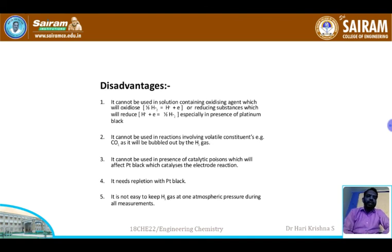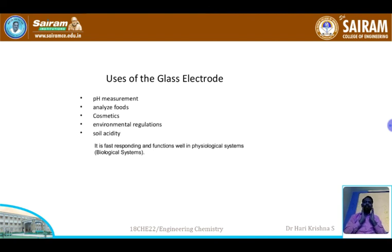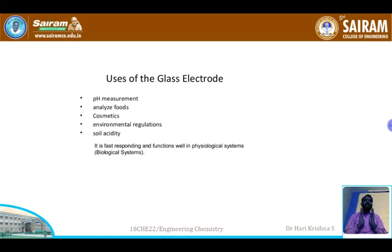The uses of the glass electrode include: pH measurements — almost all pH instruments use the glass electrode. It is used to analyze food, cosmetics, environmental regulation, and soil acidity. Wherever acid measurement is required, the glass electrode is used, since it depends on the concentration of H+ ions. pH equals negative logarithm of H+ concentration, so the glass electrode is applicable to any medium — food, cosmetic, soil, or otherwise.